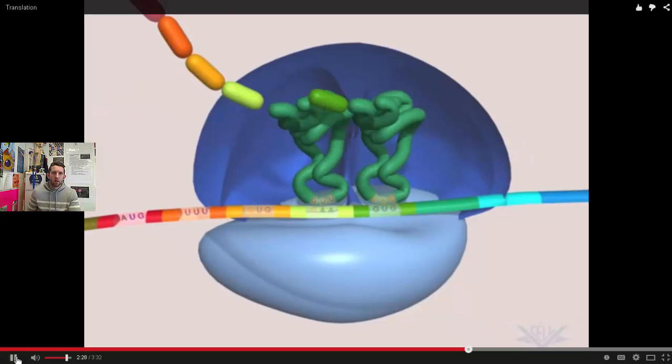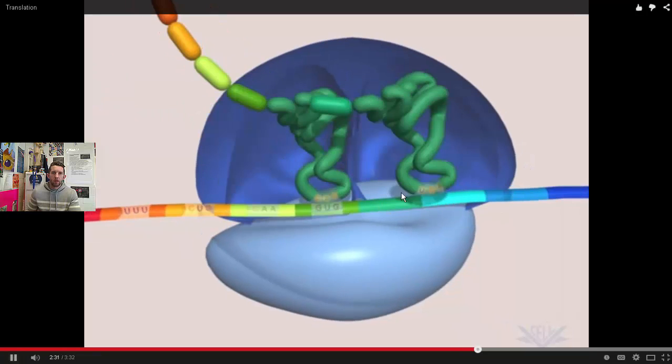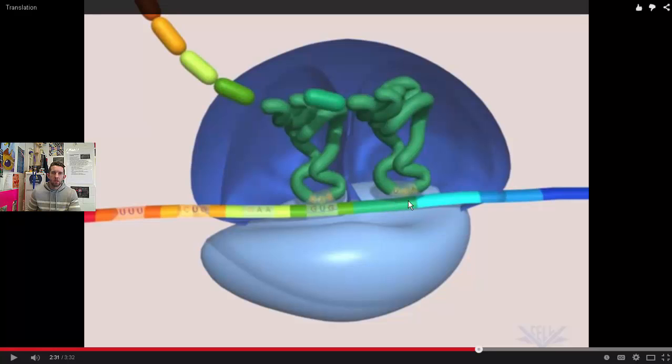The mRNA codon keeps calling in tRNA anticodons. This is a codon. Anticodon matches up with the codon, and it brings in a particular amino acid.